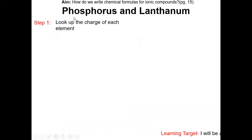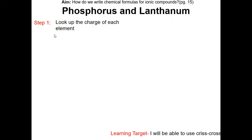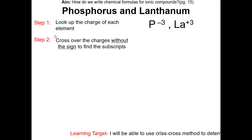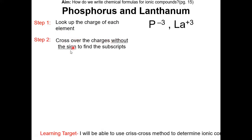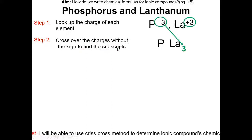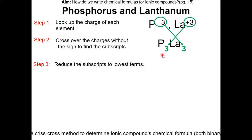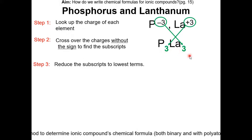Let's do another example. Here we have phosphorous and lanthanum. Step 1: look up the charge of each element. P is minus 3, and La is positive 3. Step 2: cross over the charges without the sign to find the subscripts. Step 3: reduce the subscript to the lowest terms. The greatest common factor here is 3, so we divide all the subscripts by 3.